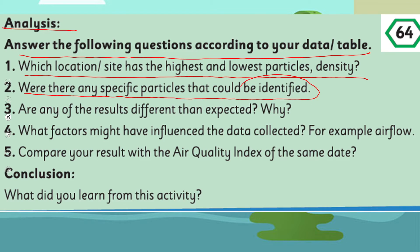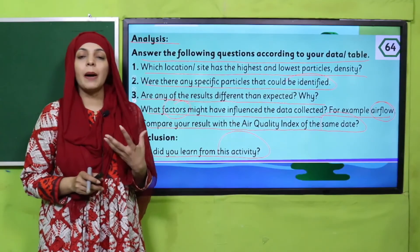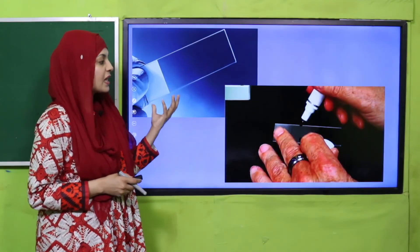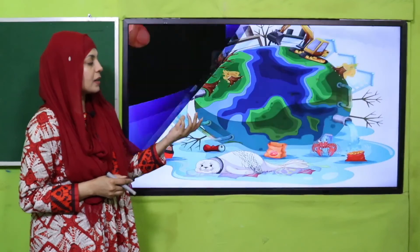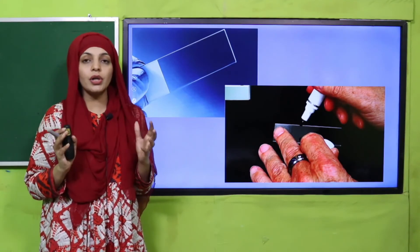Were any results different than expected? If so, write the reason. What factors might have influenced the data collected — for example, air flow? If the wind was strong that day, how did it affect your data? Compare your results with the air quality index for the same date. For your conclusion, note what you learned from this activity. The main conclusion should be that our air is full of different types of pollutants — this is how the activity demonstrates air pollution.